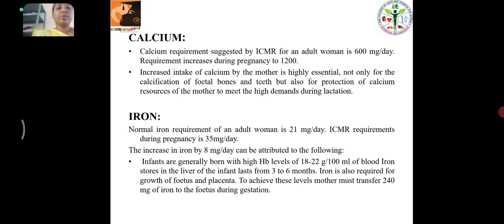Calcium: The calcium requirement recommended by ICMR for an adult woman is 600 mg per day, and this increases during pregnancy to 1200 mg. Iron: The normal iron requirement for an adult woman is 21 mg per day, while the ICMR requirement during pregnancy is 35 mg per day. Iron is also required for growth of the fetus and placenta, and the mother must transfer 240 mg of iron to the fetus during gestation.